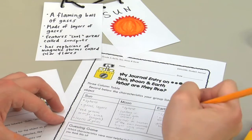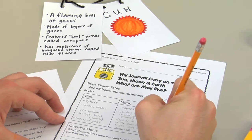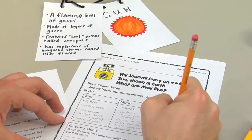You can then play a guessing game with your class to reinforce their ability to identify the characteristics of the Earth, Sun, and Moon.